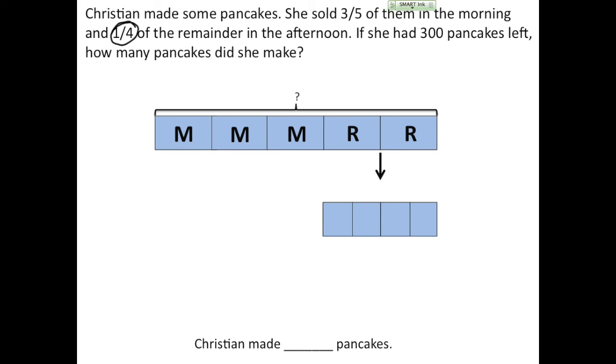So I split it up into four parts. One of those parts represents what was sold in the afternoon. I'm then told that she had 300 pancakes left. So I'm going to label what's left over as 300. And I could also put an L in each one of these boxes so that I know that that's what's left.